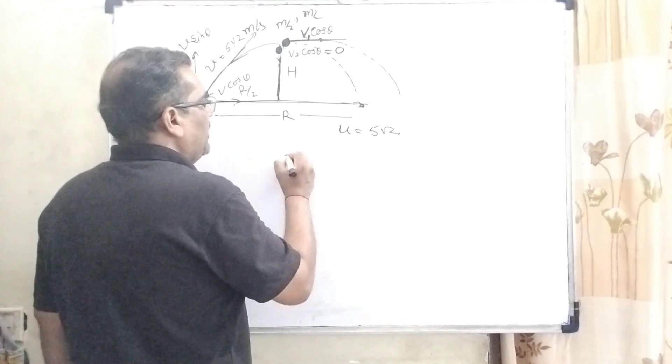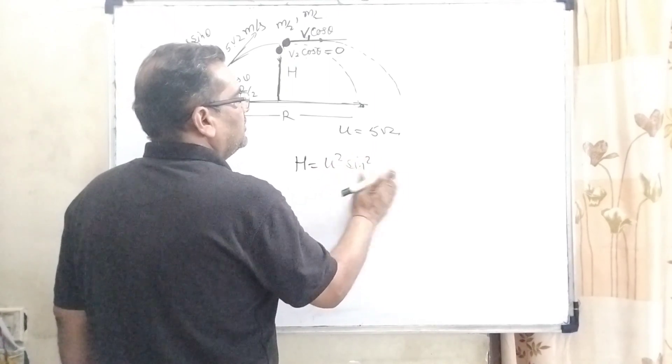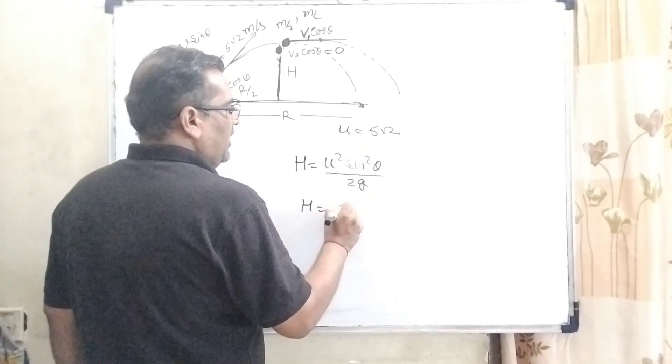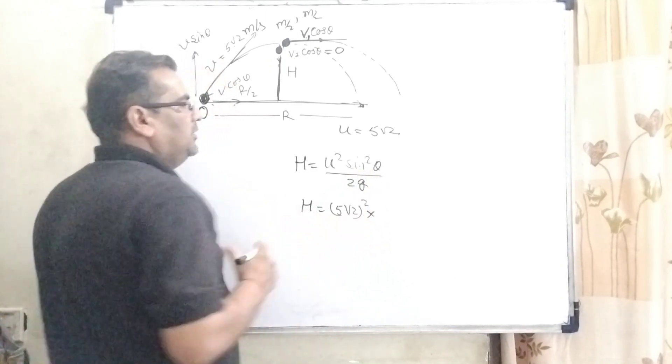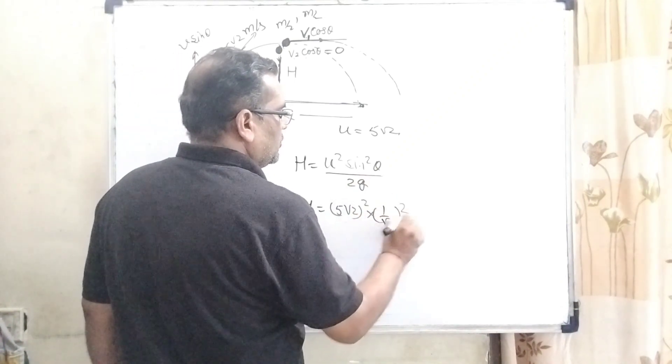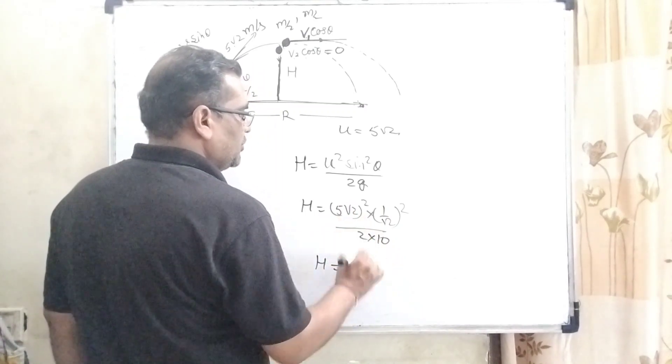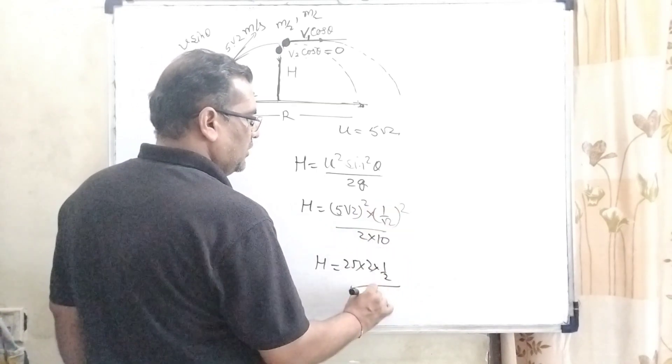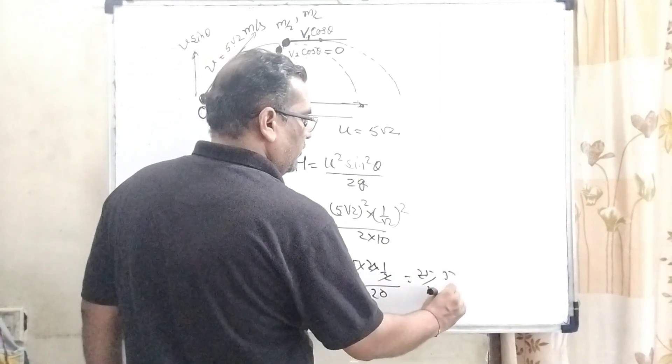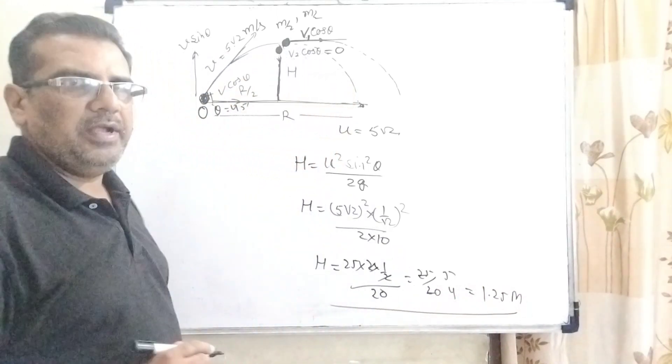Now here we have to find out firstly maximum height. h = u² sin² θ / 2g. Here u is given as 5√2, so u² sin² θ where θ is 45 degrees means (1/√2)² and g is 10. So h = 25 × 2 × (1/2) / 20. 2 cancels out, 25/20, 5×5 = 25, 5×4 = 20. So its value is 1.25 meters. So we get h = 1.25 m.